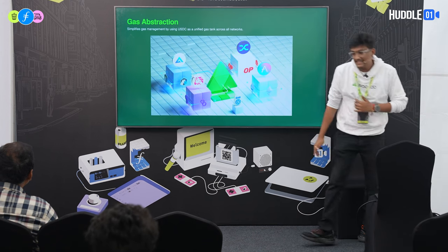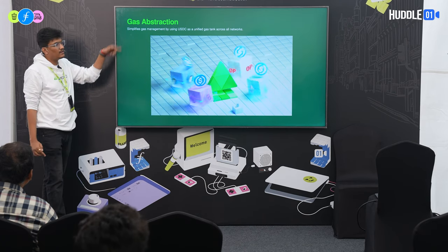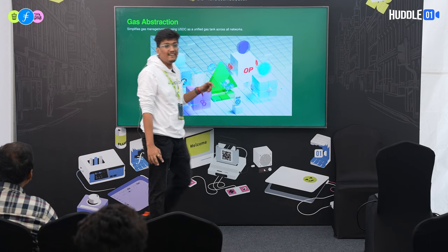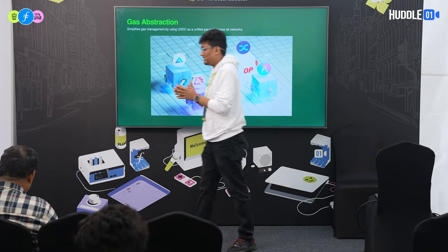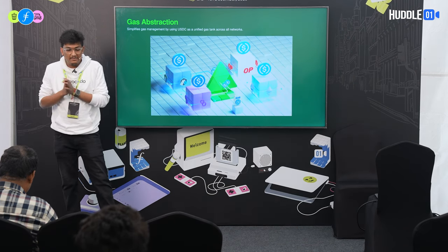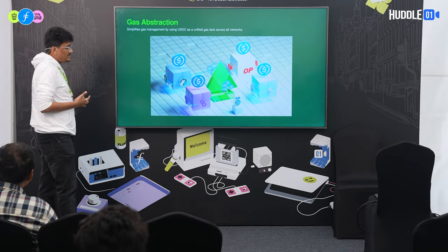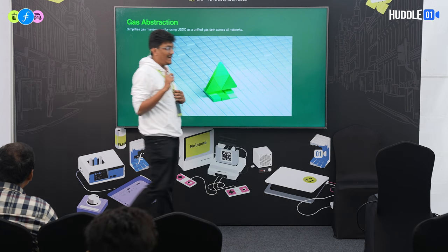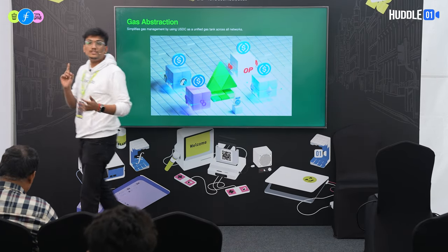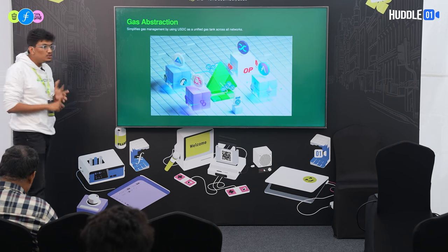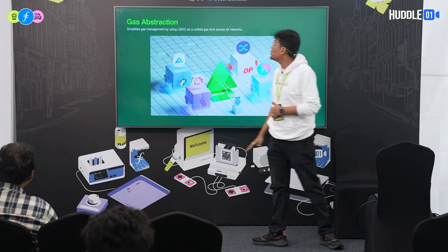The third abstraction is gas abstraction, which I'd say is one of the biggest. We have a unified gas tank — the unified gas tank is in USDC. You top up on any chain and use it on any chain. For example, top up USDC on Arbitrum, and you can use that USDC to do transactions on Polygon, Optimism, Arbitrum, or any chain that Avocado supports. That's gas abstraction.